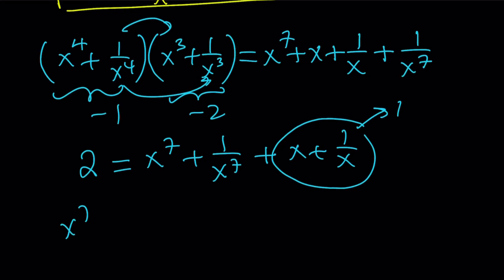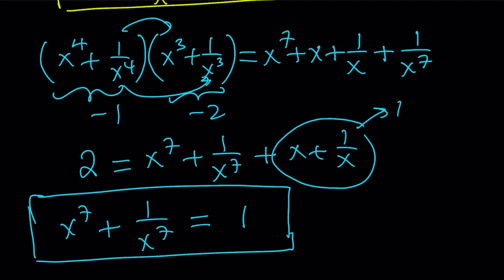So we're going to get 2 equals x^7 + 1/x^7 + x + 1/x. But x + 1/x is equal to 1. So I can just replace it with 1. And that gives me 1. Everything is 1 or -1 or 2 or -2. Anyways, x^7 + 1/x^7 from here is just going to be 1. That's interesting. We had the sum x + 1/x equals 1, and we raised both of these to 7th power and added them again, but we still got the same answer.